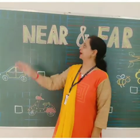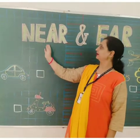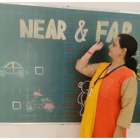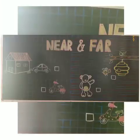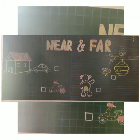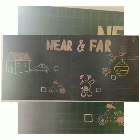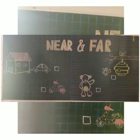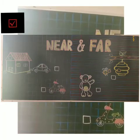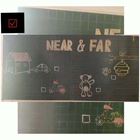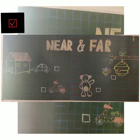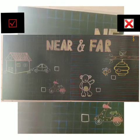Now children, we will do exercises related to the concept of near and far. In these exercises, we have to put a tick in the box for the object that is near, and cross out the object that is far.